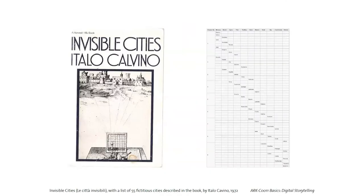We start with a reference mentioned before: a book by Italo Calvino called Invisible Cities, or La Citta Indivisibili. It's a good reference for students to read. I mentioned this book before, but now I'm showing it. It's a fictional account of Marco Polo visiting Kublai Khan, the emperor of China, and basically talking about Europe — cities in European culture — because back in that day, Western and Eastern cultures were very far apart.